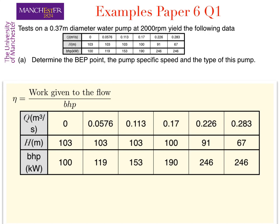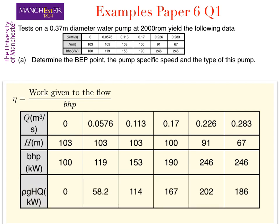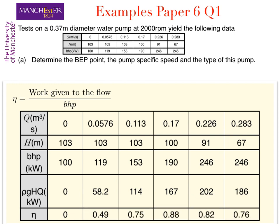To find this we extend the table starting with the flow rate and the head and the given brake horsepower. We can find ρgHQ by multiplying Q by the head given in the table and ρ and g for water.